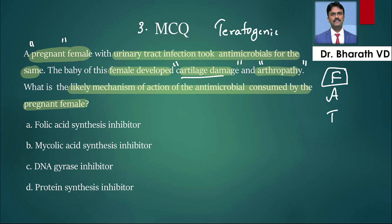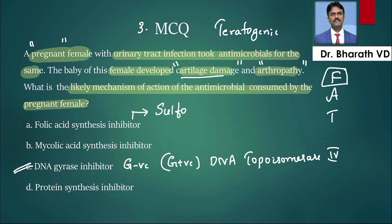What is the mechanism? They are DNA gyrase inhibitors. In gram-negative, they inhibit DNA gyrase. In gram-positive, they inhibit DNA topoisomerase 4. The answer is C.